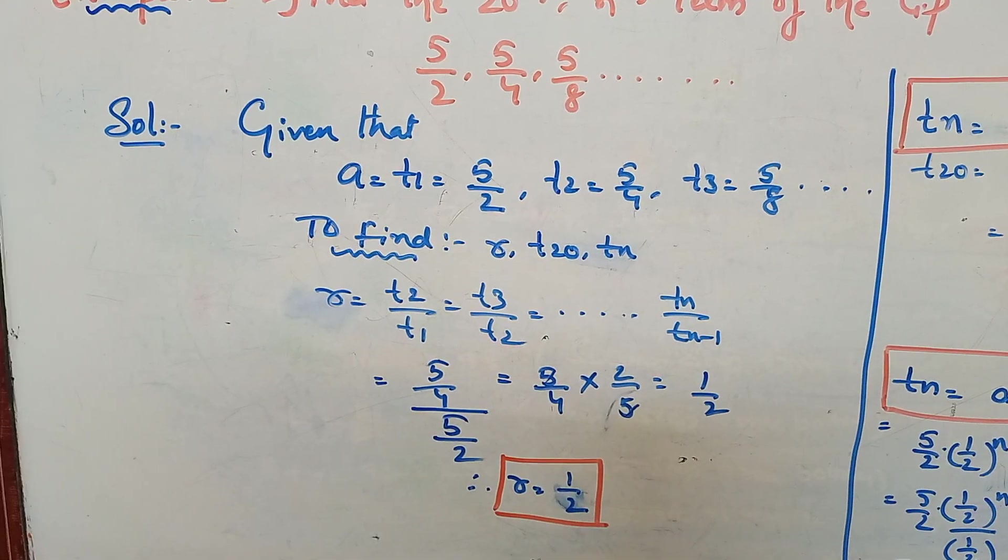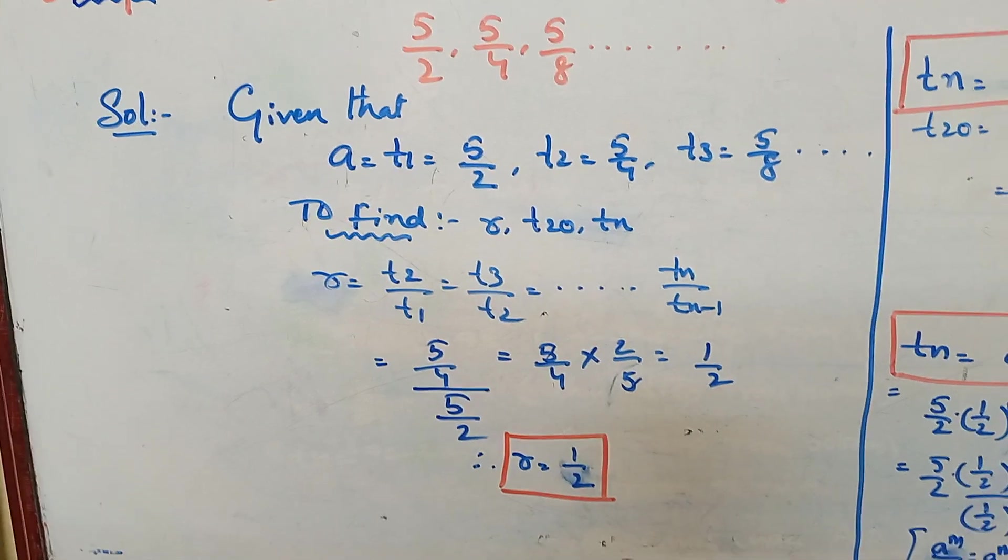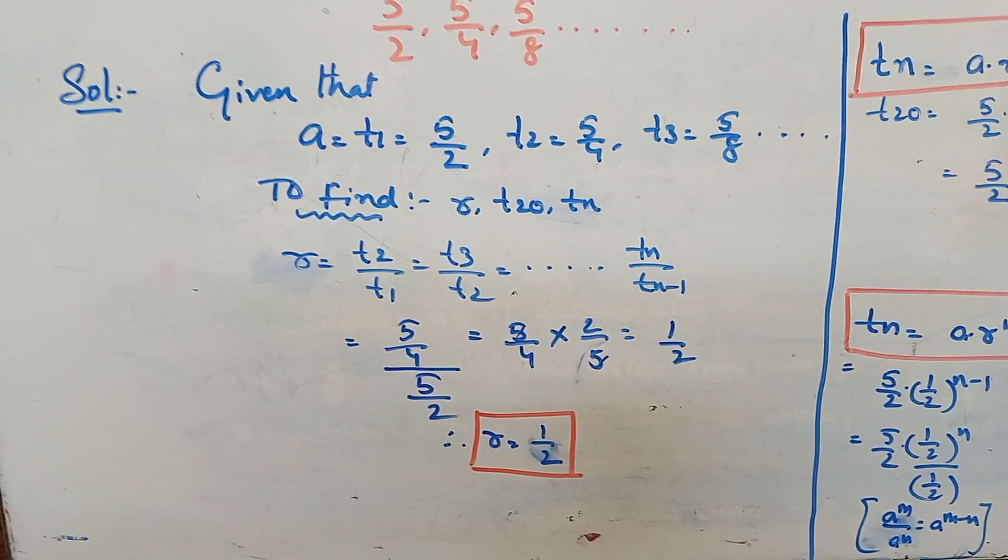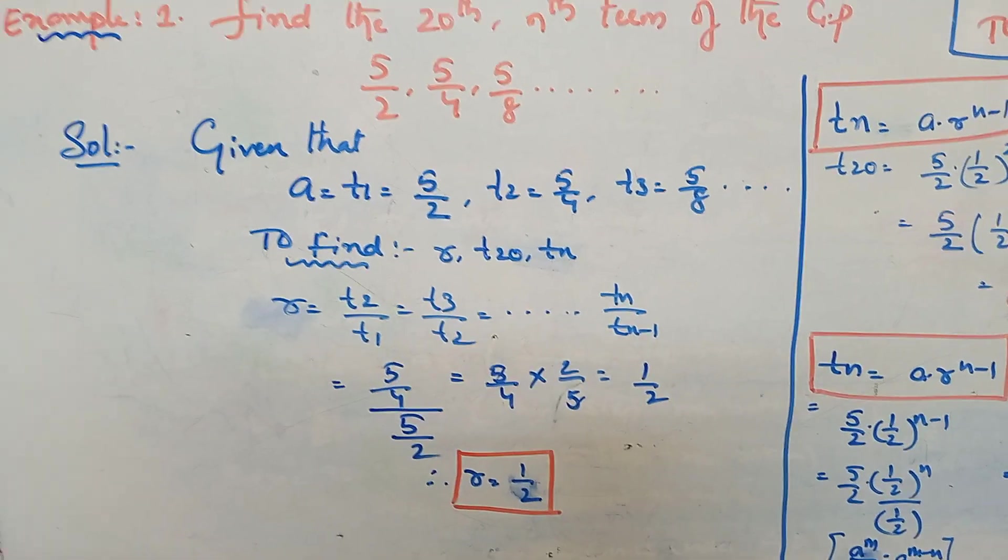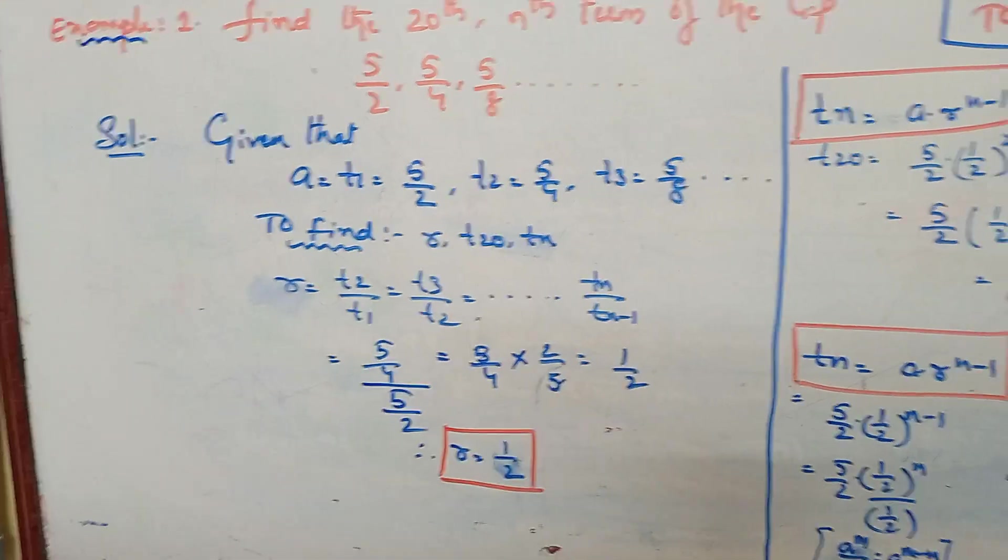Before that, we need to find the common ratio also. So I have mentioned here r equals t2 by t1 equals t3 by t2, and so on, tn by tn minus 1. So simplify: 5 by 4 by 5 by 2. The denominator part becomes reciprocal. It becomes r equals 1 by 2 after simplifying. So we got r value is 1 by 2.